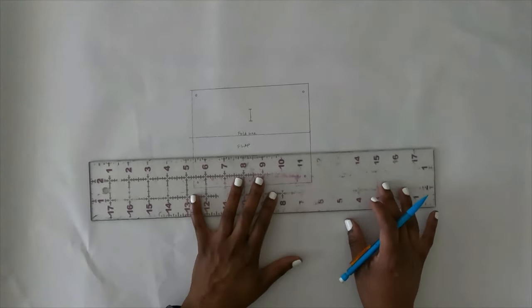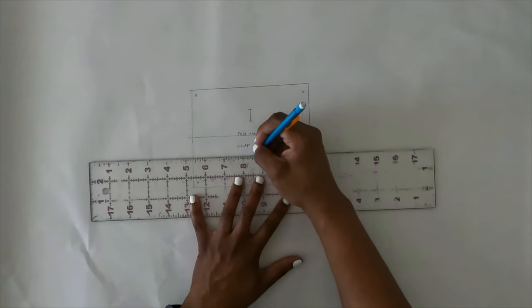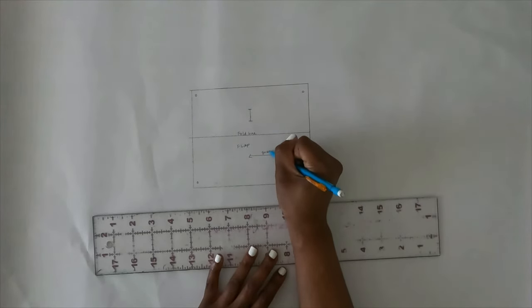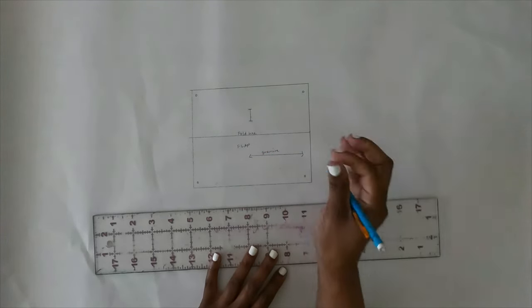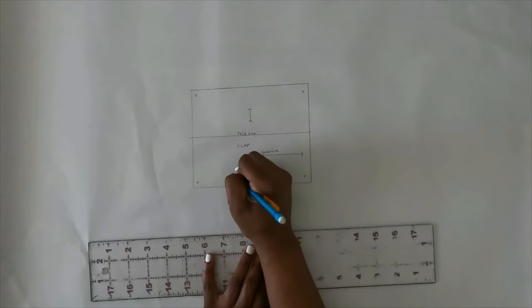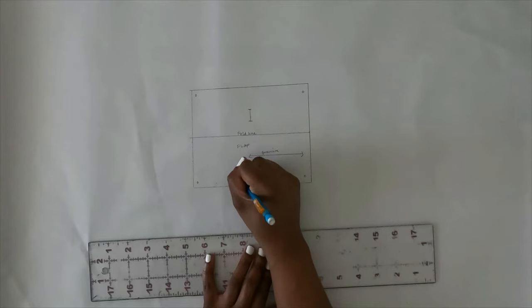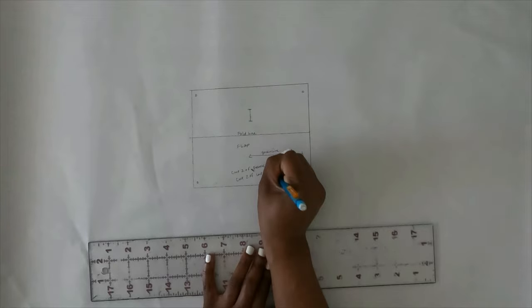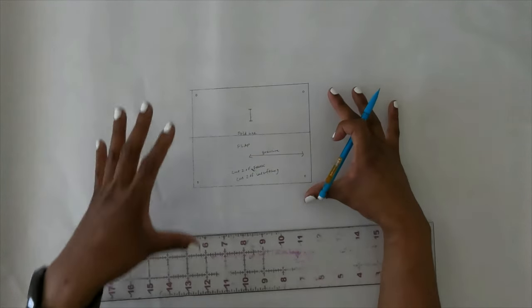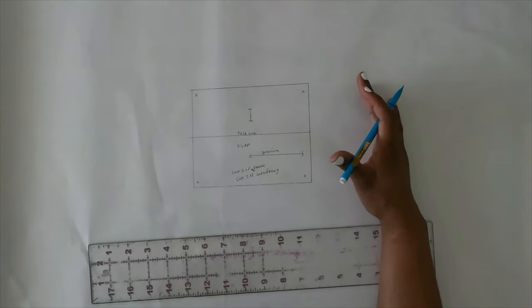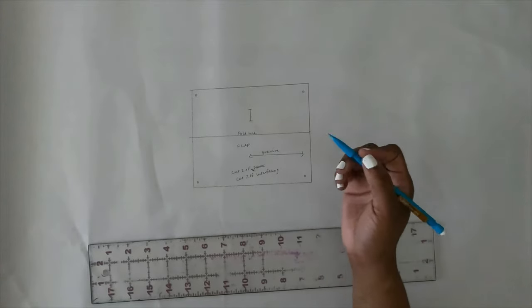Now you just need to create your grain line, which your grain line needs to be like that. And you could mark grain line here. And then the only thing you need to do is mark it cut two of fabric and then cut two of interfacing and you have a flap that you could put on the bust part of anything really, you could put it on a top. You could put it on your shirt dress. That's completely up to you.